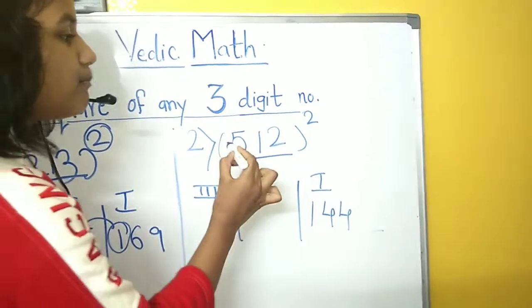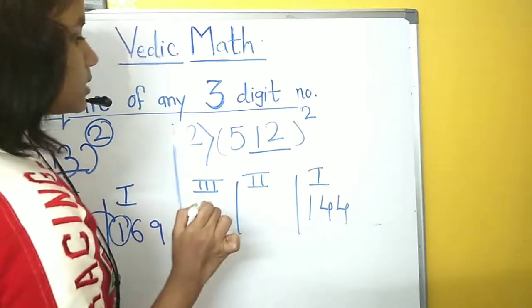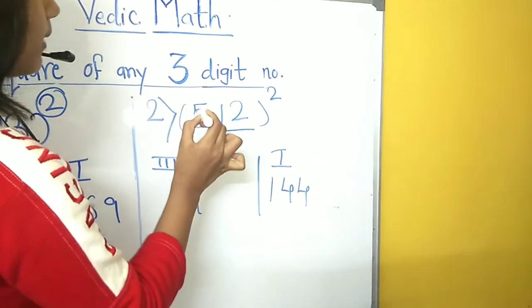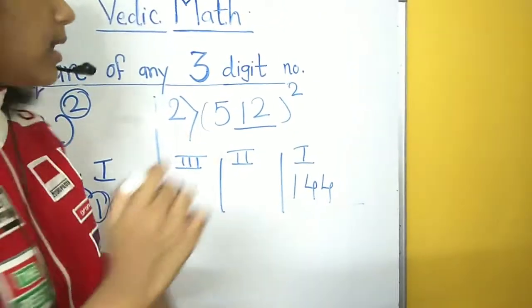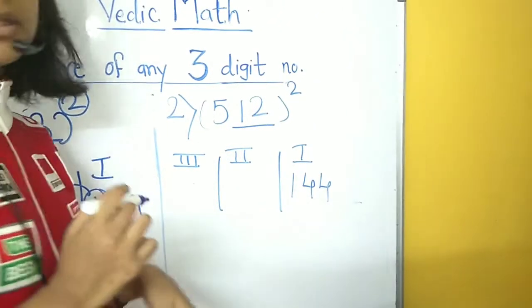So, in the second step, we will multiply all the three numbers. Now, we will multiply 5 multiplied by 2, which will be 10, and 10 multiplied by 12, which is 120.